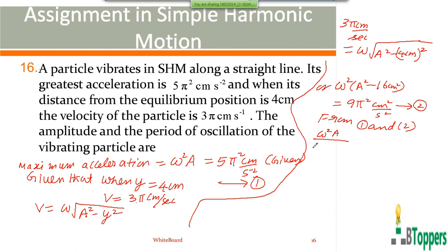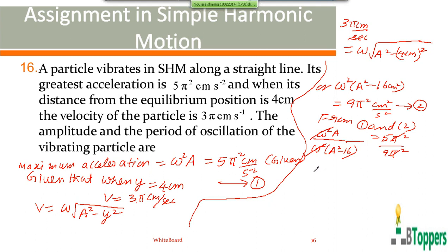Dividing the first equation by the second equation, with all units in the SI system, omega² cancels and pi² cancels on the right side. Cross-multiplying and solving yields the displacement amplitude A. After calculating A, substitute back into one of the equations to find omega, then the time period T = 2π/omega. For question number 16, the second option is the answer.